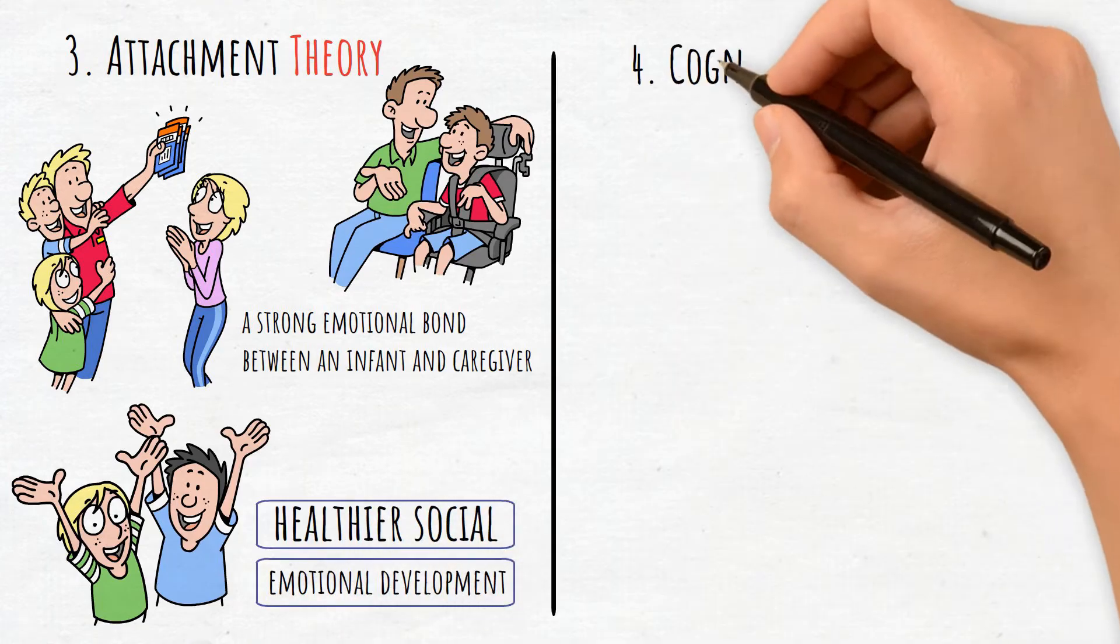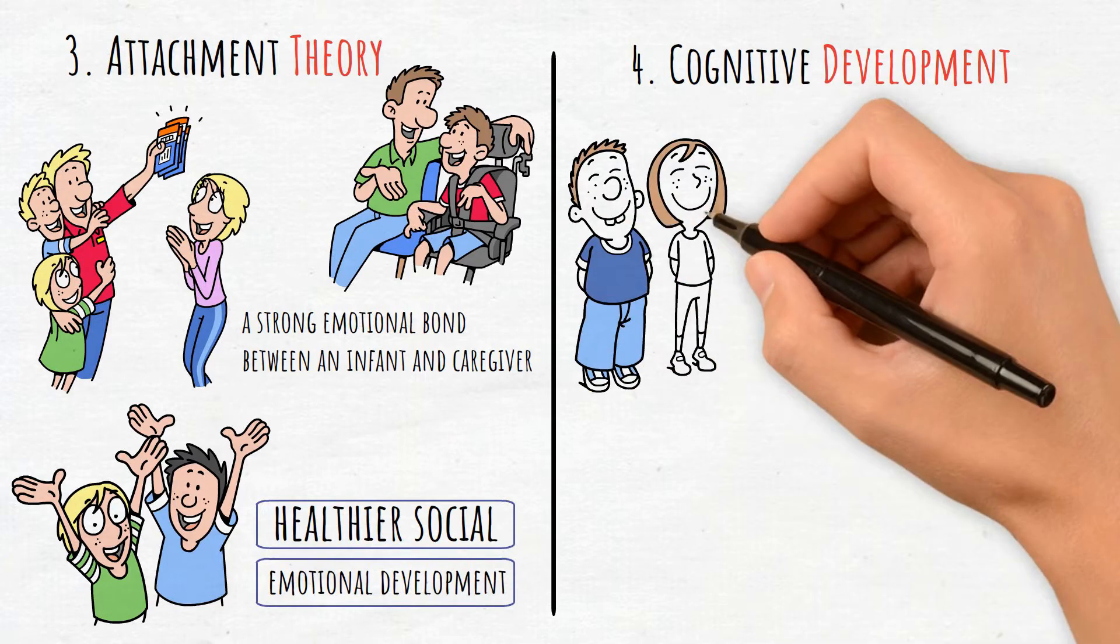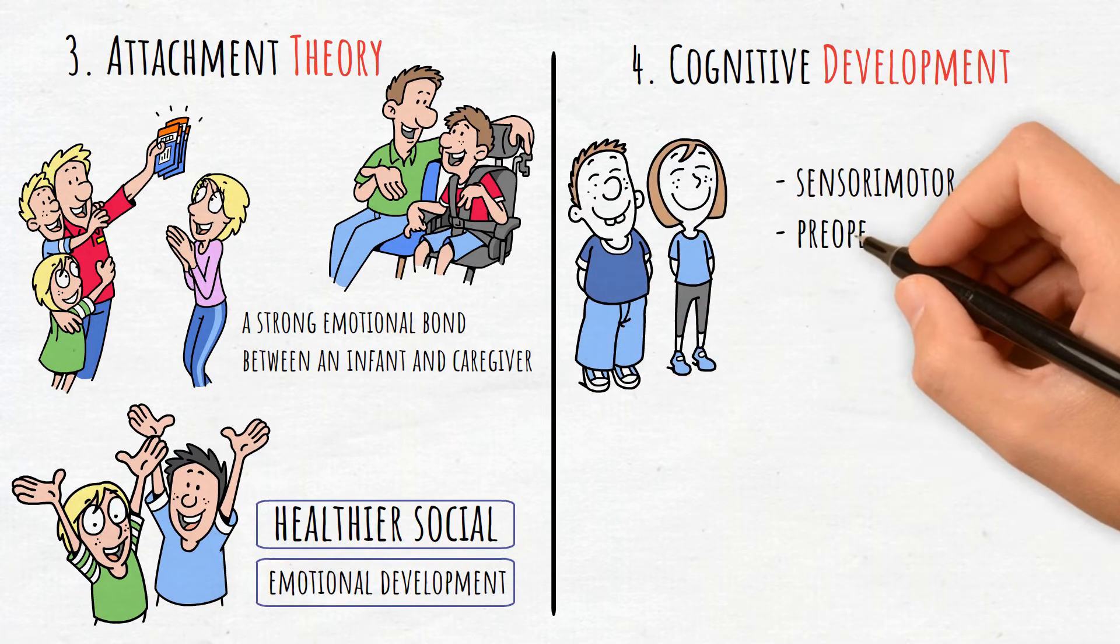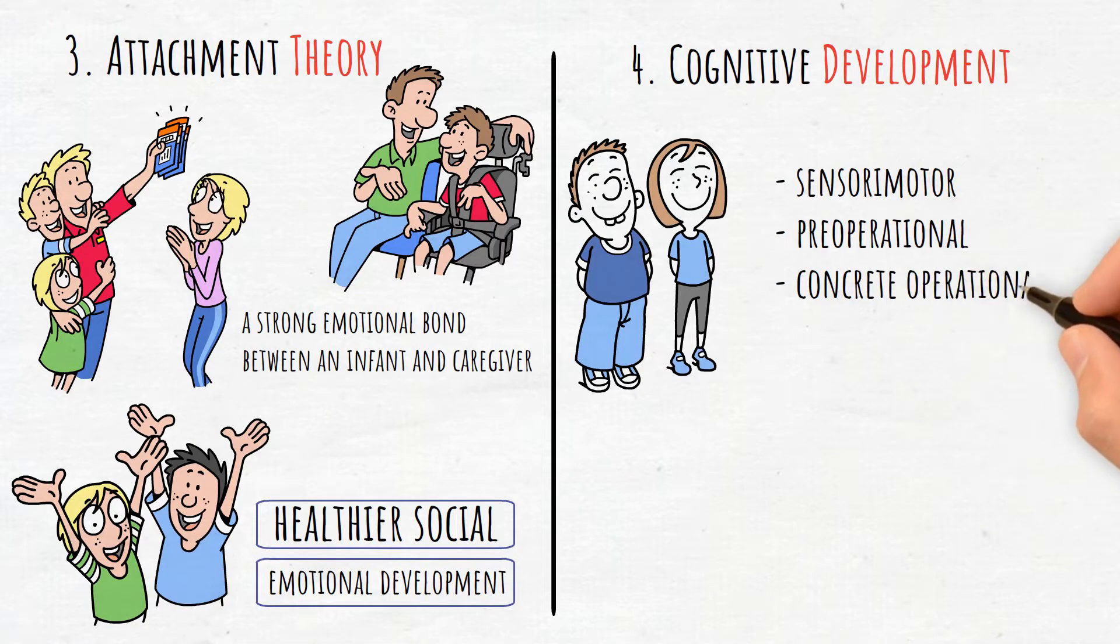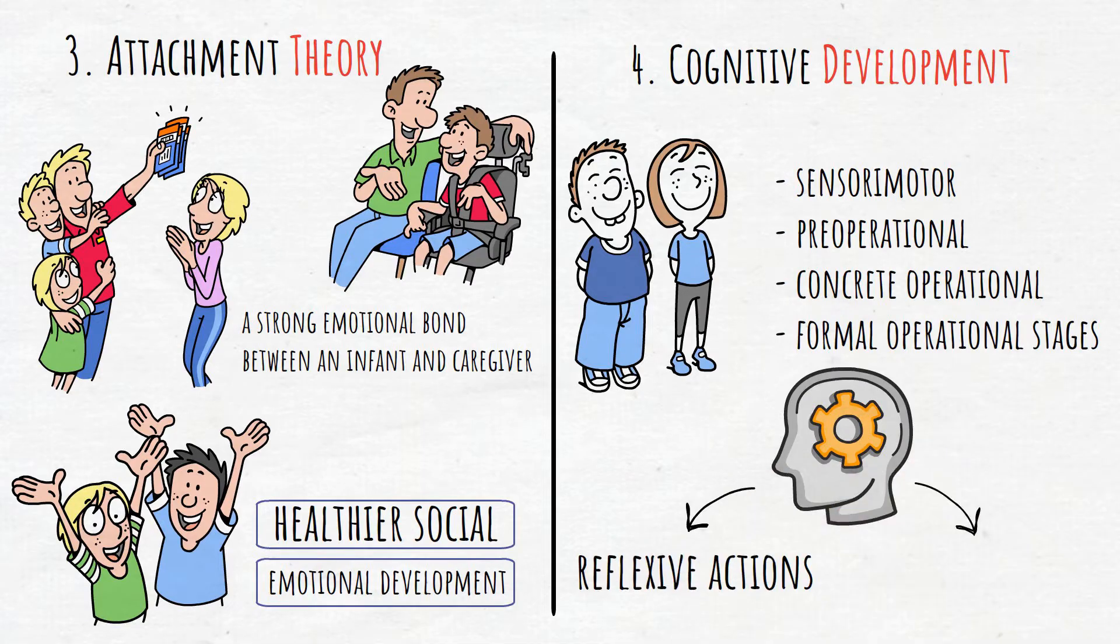4. Cognitive Development. Stages of cognitive growth in children, such as the sensory motor, pre-operational, concrete operational, and formal operational stages, highlight how children's thinking evolves from reflexive actions to abstract reasoning.